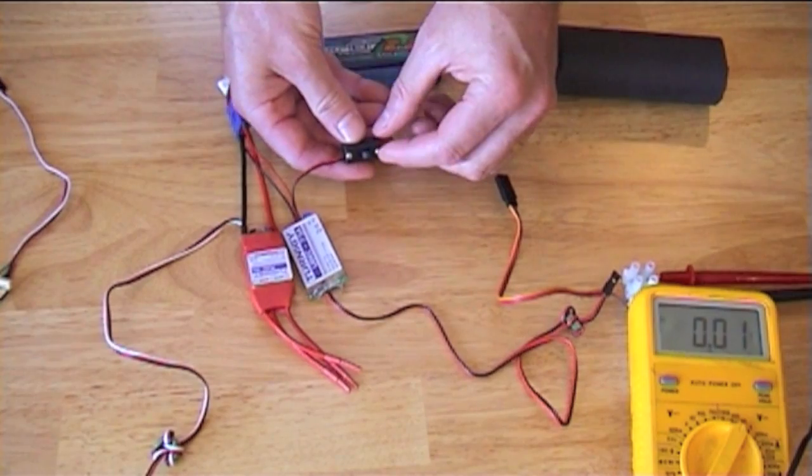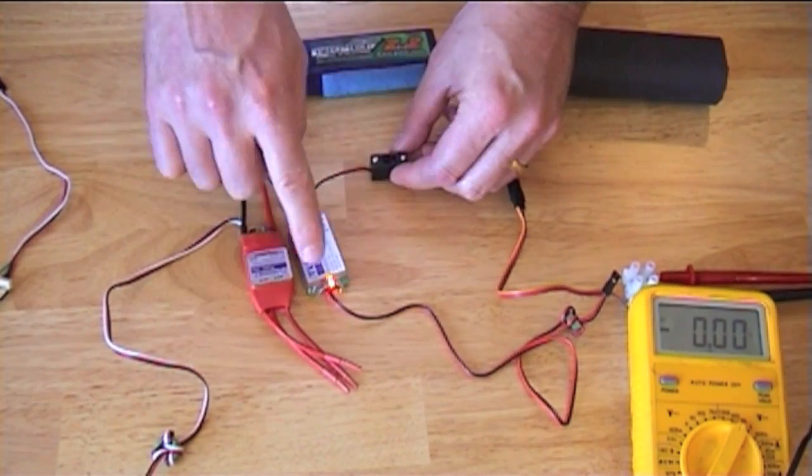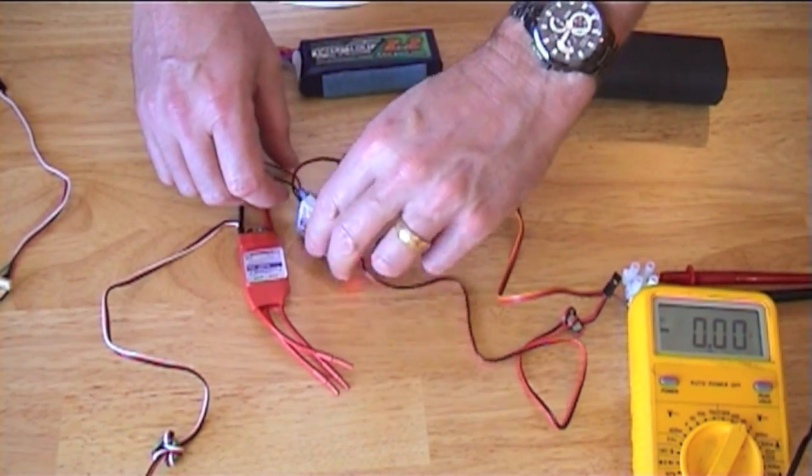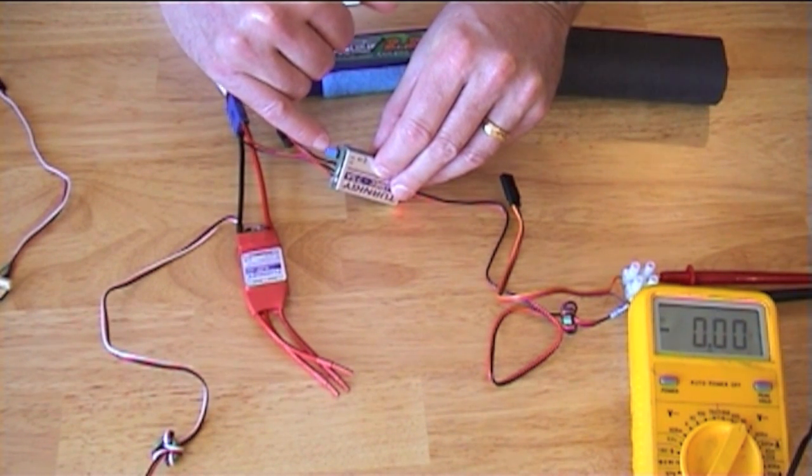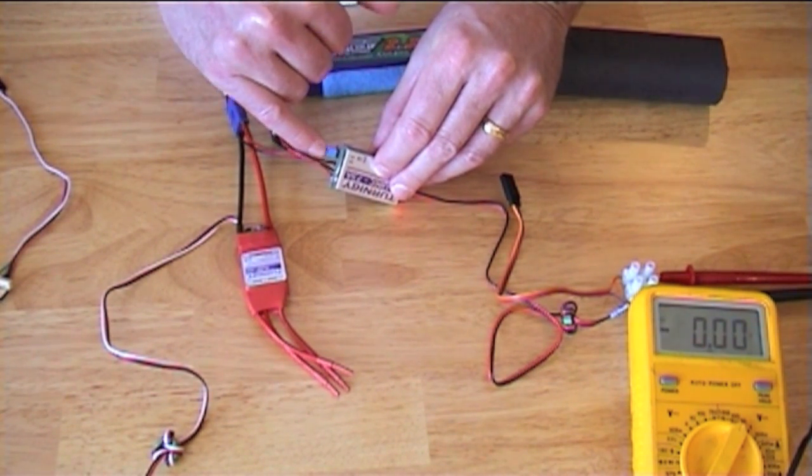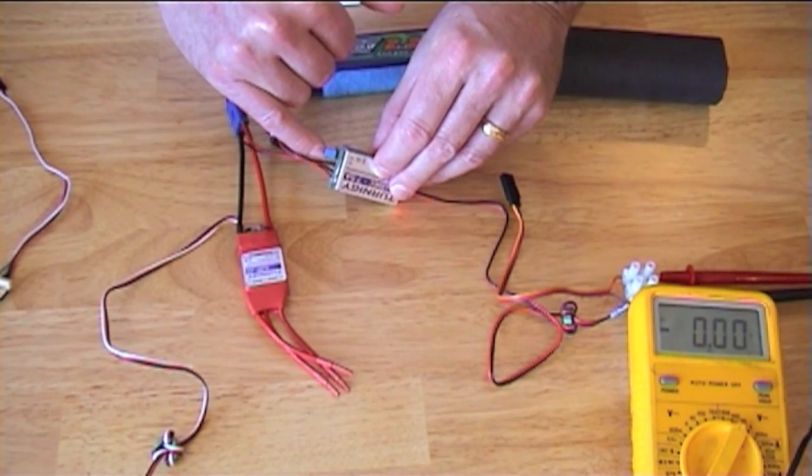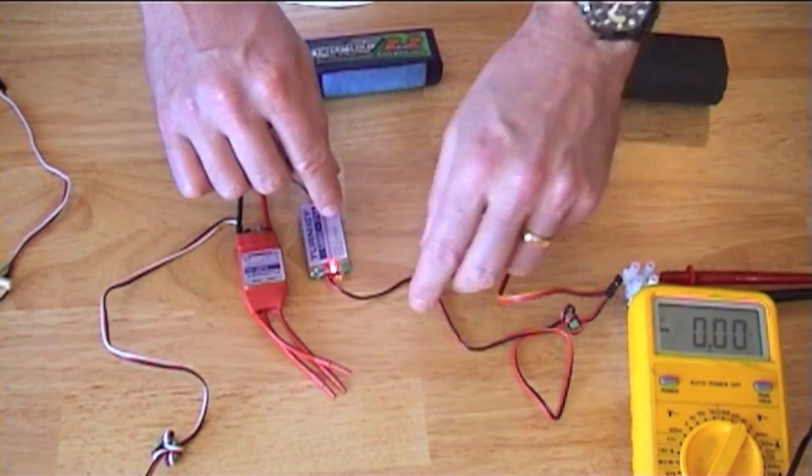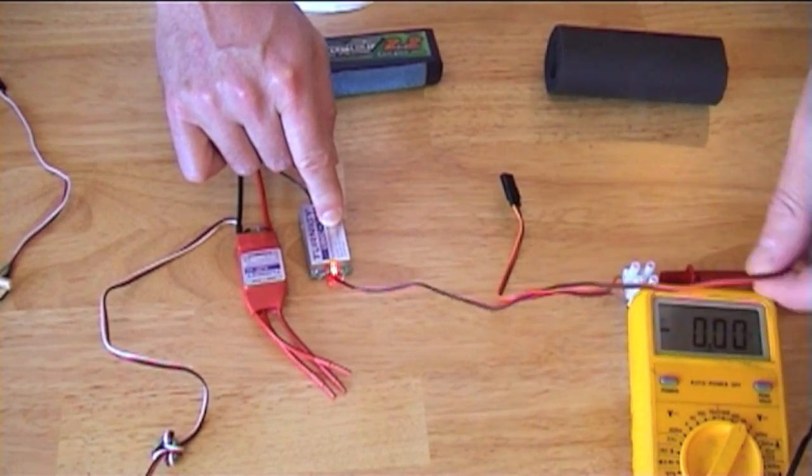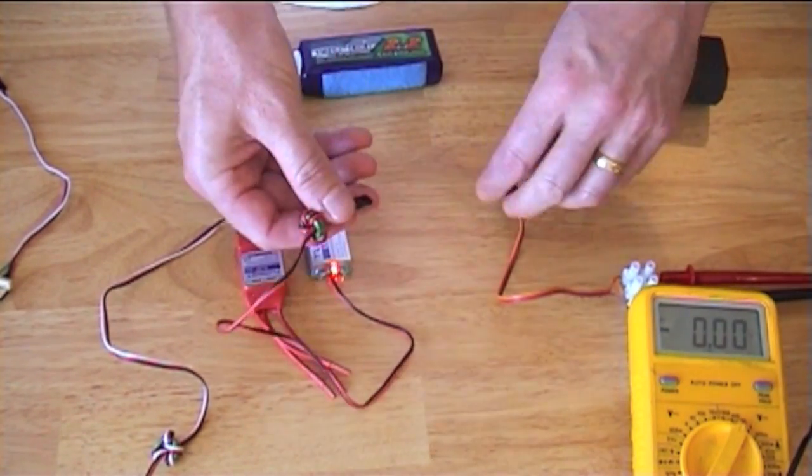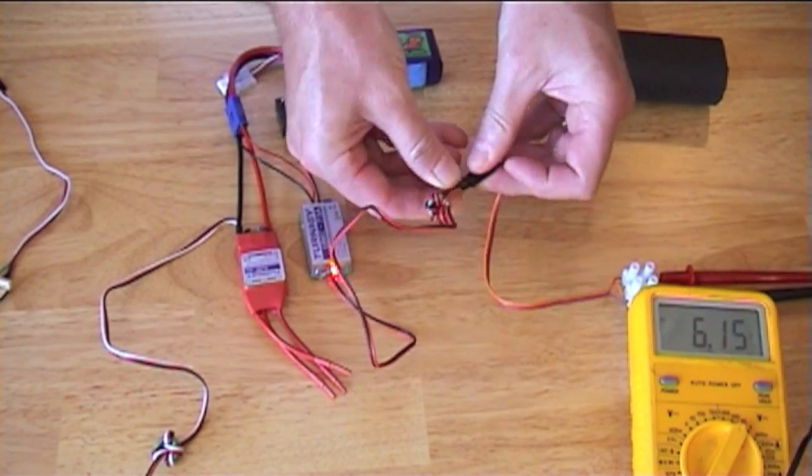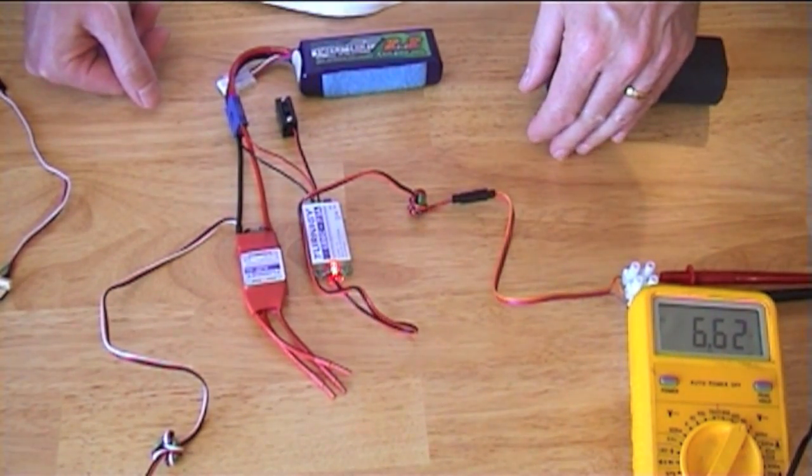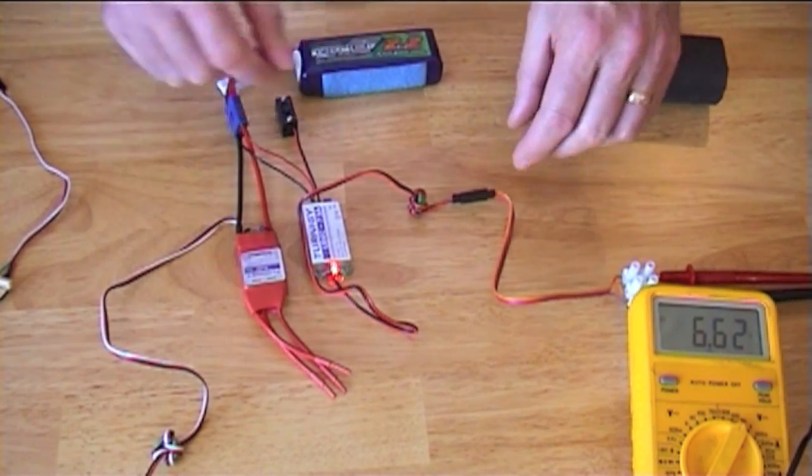The UBEC will turn that on, has its own on-off switch. Light comes on. You'll see here there's a short here. You move the short to be a 5 volt output, or I've got it here on the 6 volt output. You'll see it's a little bit above 6 volts anyway. You've got 6.6 volts off the UBEC.